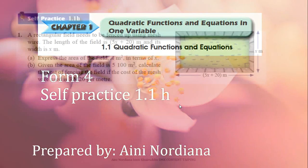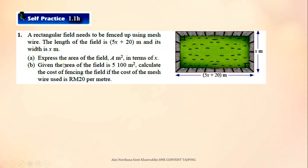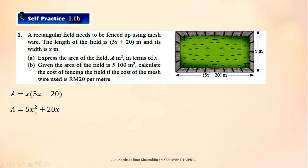Next, self-practice 1.1h. This is a problem-solving question. A rectangular field needs to be fenced using mesh wire. The length of the field is (5x + 20) and the width is x meters. Express the area of the field A in square meters in terms of x. The formula for area of a rectangle is length times width, so A = x(5x + 20). Expanding this gives 5x² + 20x. This is the answer for part A.